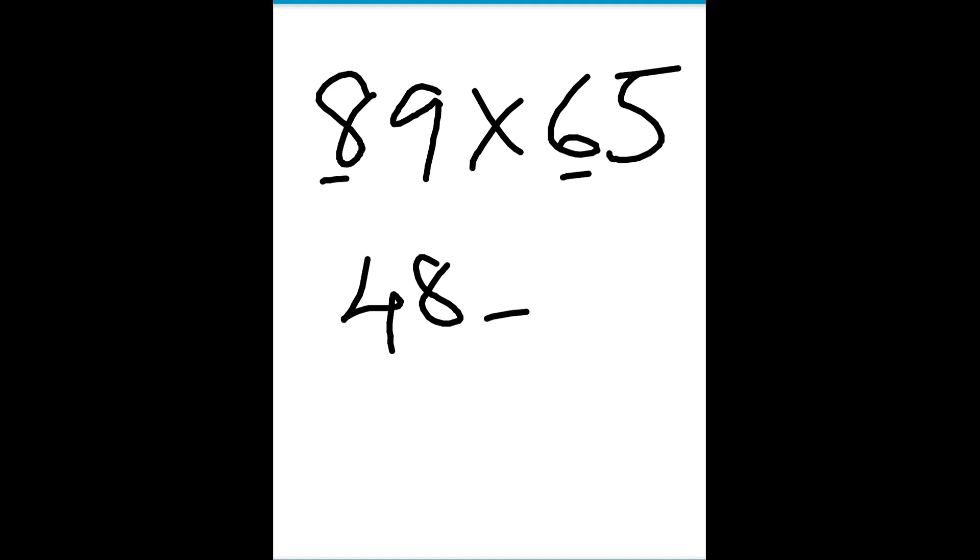Okay, we'll see another example so that you can get more clarity. Now we'll take a complicated problem: 89 times 65. Now we'll go by the same method again. 8 times 6 is 48, now leave a blank. 9 times 5 is 45, but we have only one place here, so we'll fill it with 5 and 4 is taken as carry here.